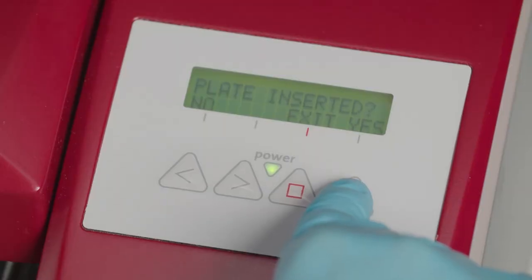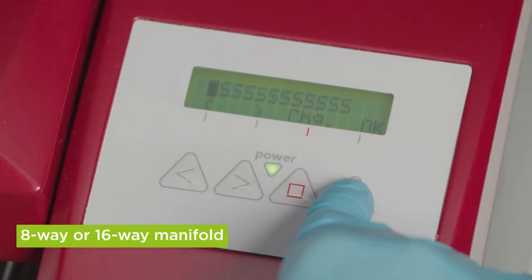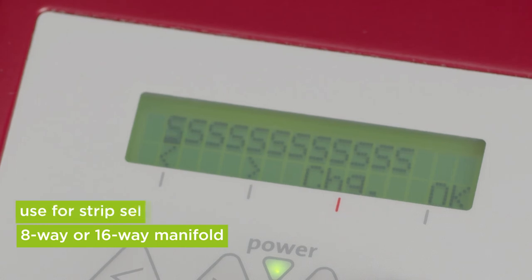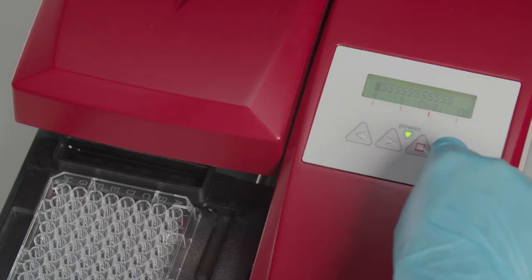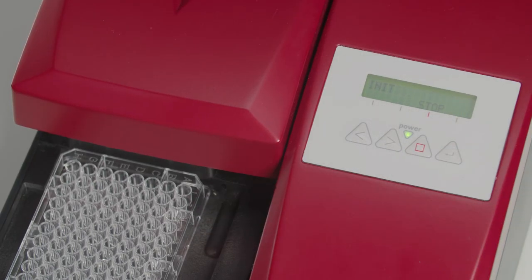The instrument automatically recognizes the manifold type and enables strip selection by pressing CHG. Select the required strips using the cursor keys. Press OK to start the wash program.